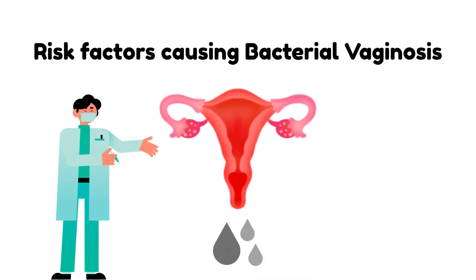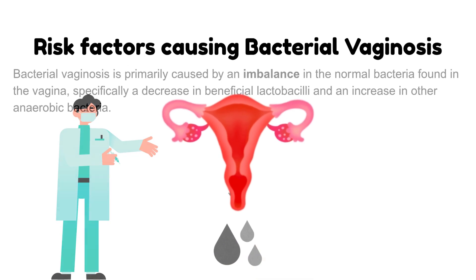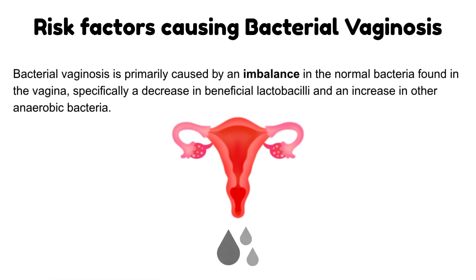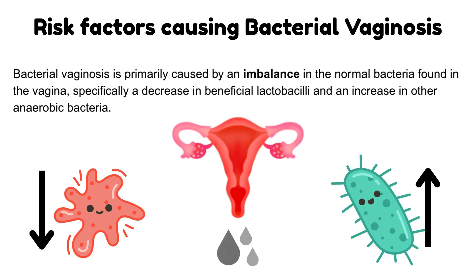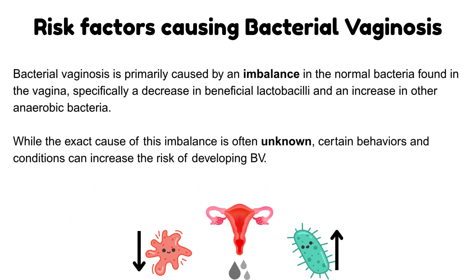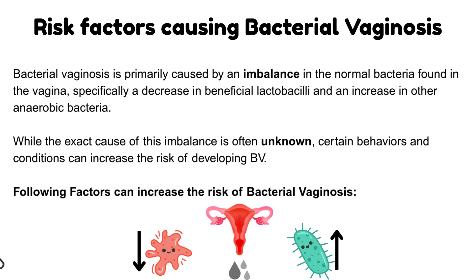What are risk factors for bacterial vaginosis? Bacterial vaginosis is primarily caused by an imbalance in the normal bacteria found in the vagina — specifically a decrease in beneficial lactobacilli and an increase in anaerobic bacteria. While the exact cause of this imbalance is often unknown, certain behaviors and conditions can increase the risk.